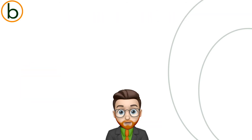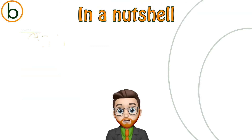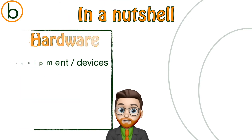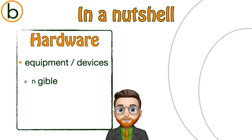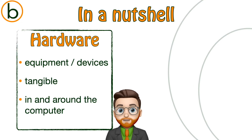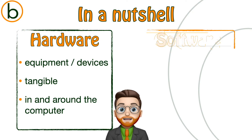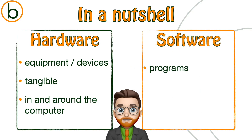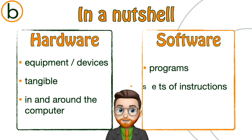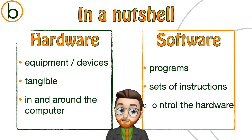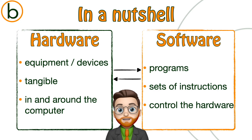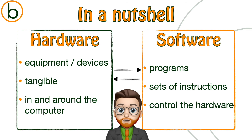So, in a nutshell: hardware, or equipment, is the physical machine you can touch. Software, or programs or apps, is a set of instructions that control that machine — and you can't touch software. One doesn't work without the other; they always need each other to make a computer function properly.